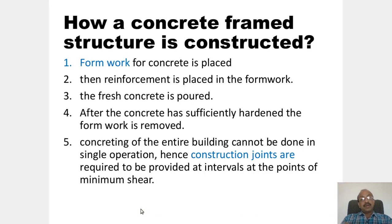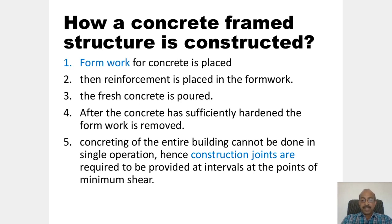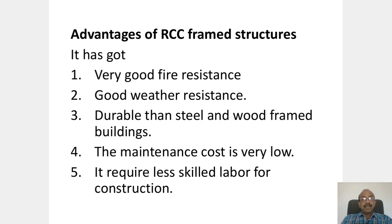How a concrete frame structure is constructed: the formwork is placed, then reinforcement is placed in the formwork, fresh concrete is poured, and after the concrete has sufficiently hardened the formwork is removed. The concreting of the entire building cannot be done in a single operation, so construction joints are required at intervals at the points of minimum shear.